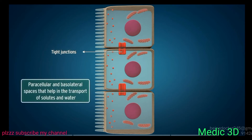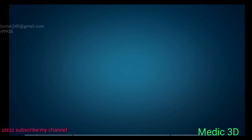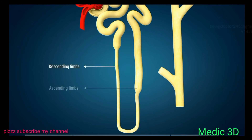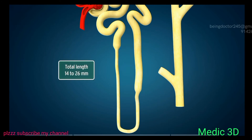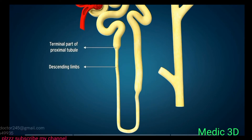The adjoining epithelial cells are bound to each other by tight junctions at their luminal ends, creating paracellular and basolateral spaces that help in the transport of solutes and water. The loop of Henle consists of descending and ascending limbs. The total length of the loop of Henle varies from 14 to 26 mm. The descending limb is in continuity with the terminal part of the proximal tubule.